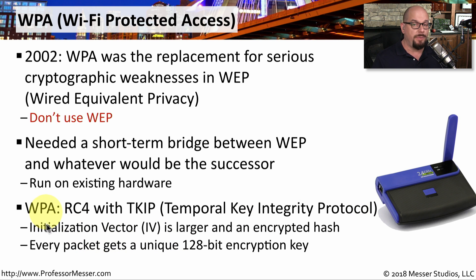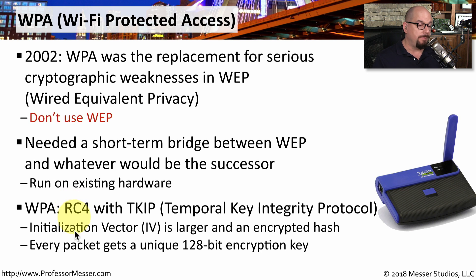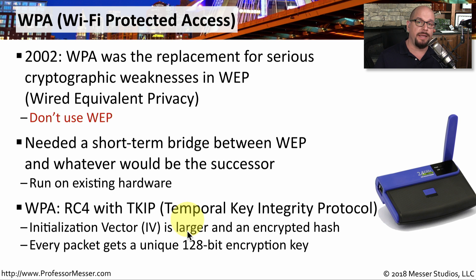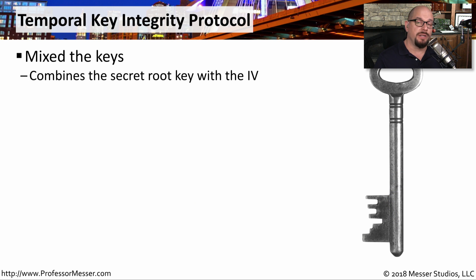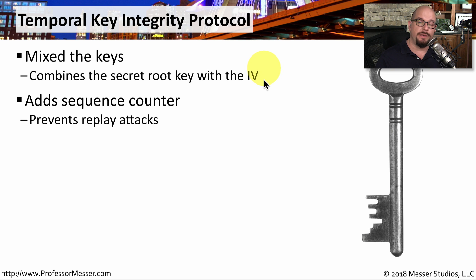The short-term bridge was WPA. WPA used TKIP, which was the Temporal Key Integrity Protocol, which took advantage of the RC4 stream cipher. With WPA, we got away from some of the problems we had with WEP. For example, we made sure that the initialization vector was much larger, and we used an encrypted hash along with the IV. Every packet would effectively get a unique 128-bit encryption key. The key information sent across the network with TKIP would change constantly because it combined the secret key with the initialization vector. There was also a sequence counter added with TKIP so that no one could perform a replay attack on our wireless networks.